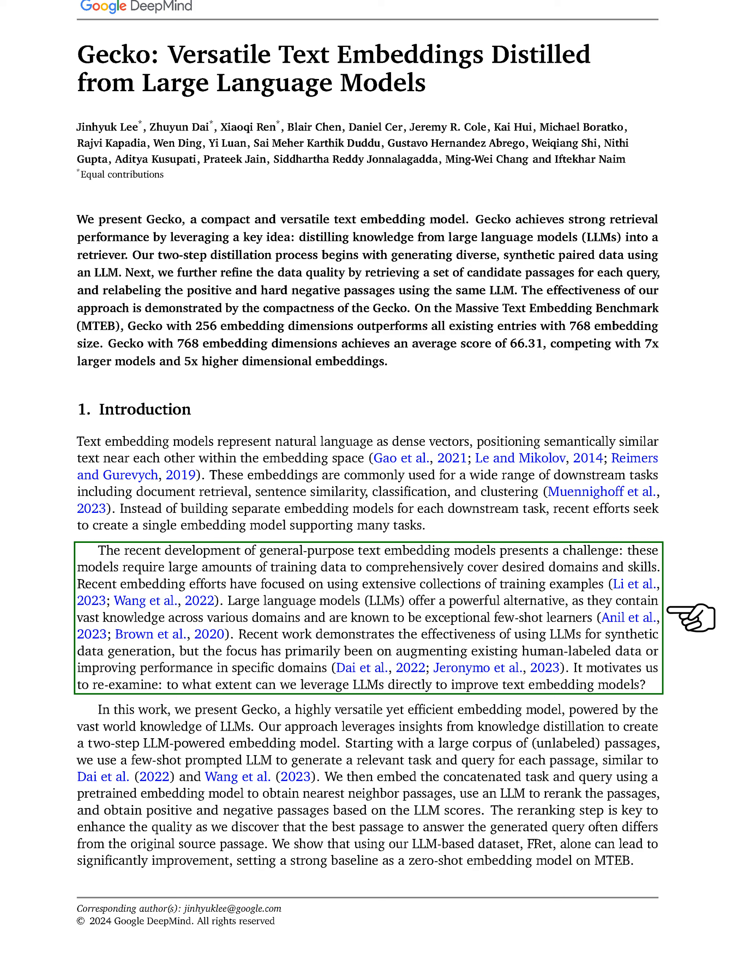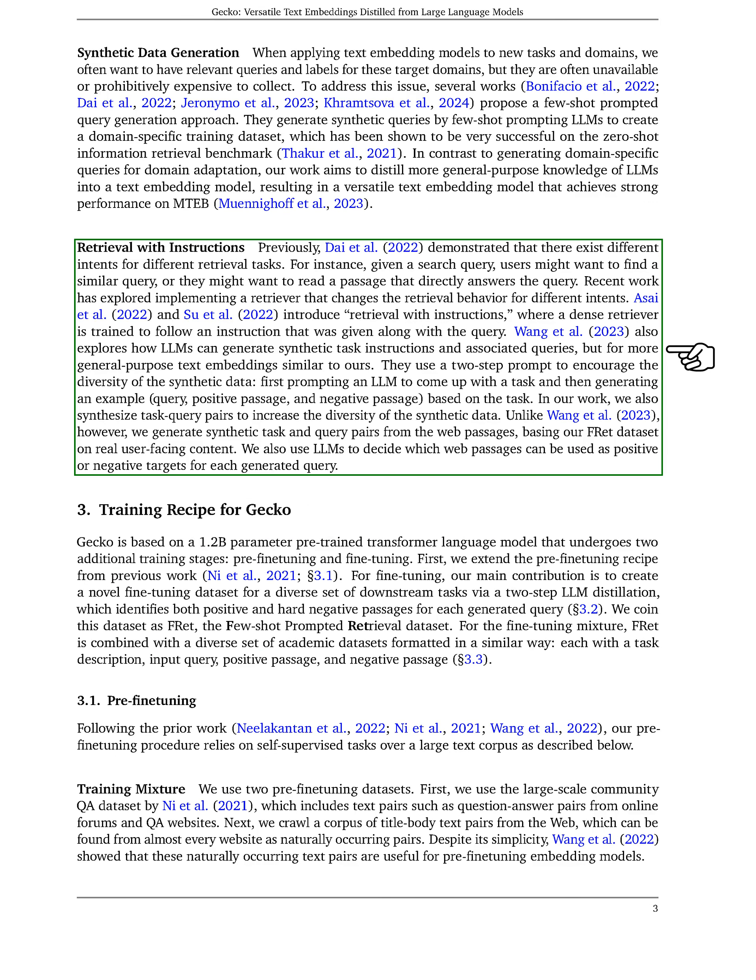By utilizing our LLM-based dataset, FRET, we achieve significant improvements, setting a strong baseline as a zero-shot embedding model on the MTEB benchmark. By combining the LLM-generated and LLM-ranked data with human-annotated data, our model, Gecko 1B with 768-dimensional embeddings, outperforms other models on the MTEB benchmark. Our work demonstrates the effectiveness of leveraging LLMs to enhance text embedding models and achieve superior performance in various tasks and domains.